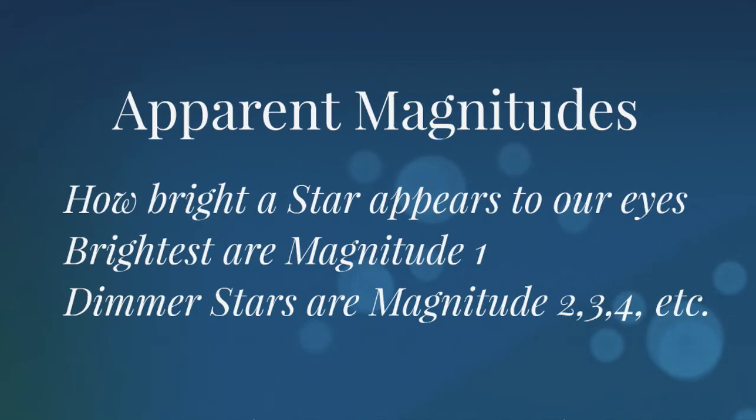And due to this ancient system, the Greeks labeled the brightest stars they could see as a magnitude 1. A star that was a little bit dimmer would be magnitude 2. A star that was dimmer yet would be magnitude 3. And on down the line. So these are apparently how bright the stars are to us.